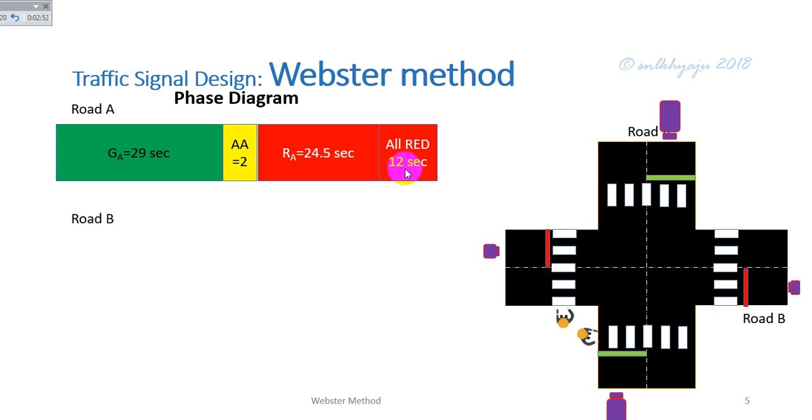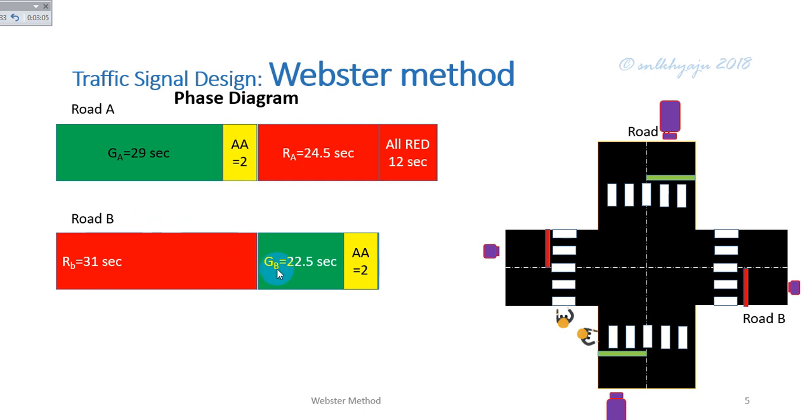The red time for road B, 31 seconds, equals green for road A plus amber for road A. Similarly, green for road B and amber for road B equals red for road A.